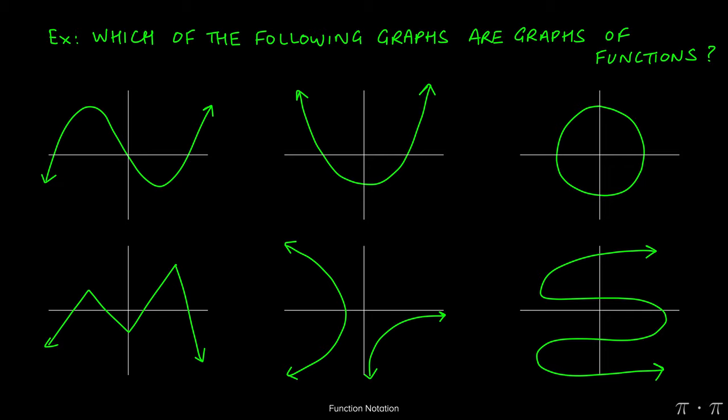Let's say we're asked to find if the following graphs are graphs of functions or not. Looking at the very first graph on the top left, we start by making vertical lines starting from left to right. And we notice that as we make these vertical lines, we notice that the graph is only intersected by these vertical lines once.